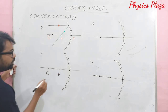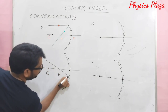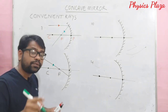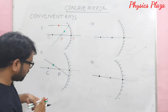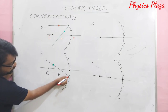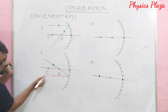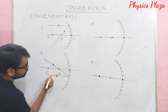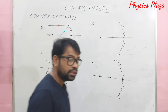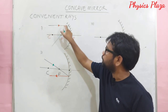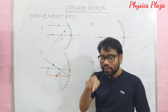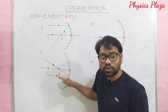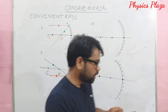Second convenient ray: if any light ray is passing through the focus of a concave mirror, after reflection it will move parallel to the principal axis. These two rules are vice versa of each other — a ray parallel to the axis reflects through focus, and a ray through focus reflects parallel to the axis.